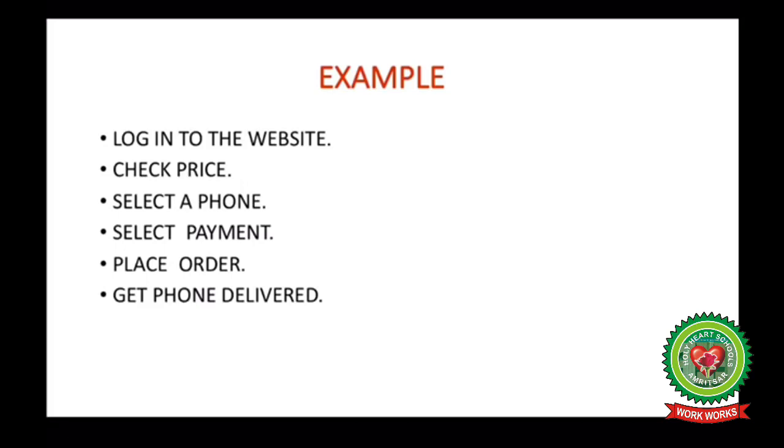Let's see it with the help of an example. Let's suppose I have to buy a phone from the internet. There are series of steps involved in a sequence in this process. First of all, I have to log in to the website from where I want to buy a phone. Then I will check the price, then select a phone, then select payment method, like either it is cash-on-delivery, debit card, credit card, then place the order and at last the phone gets delivered.